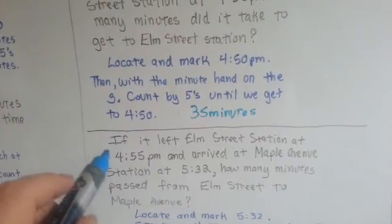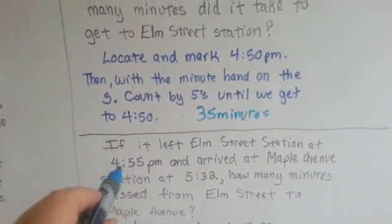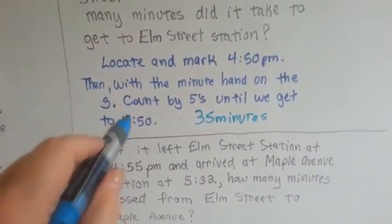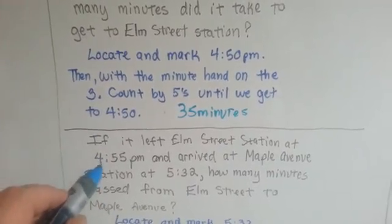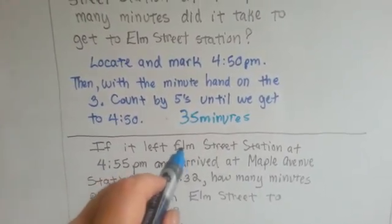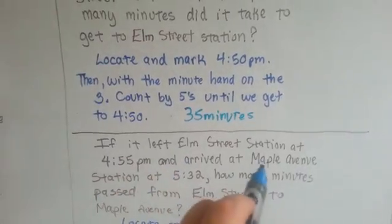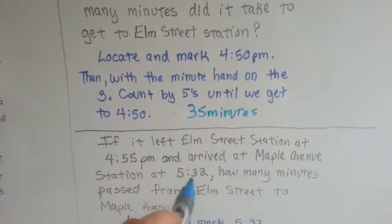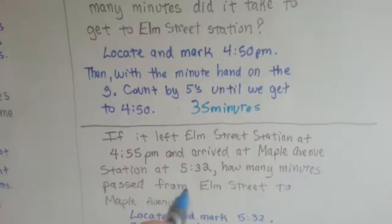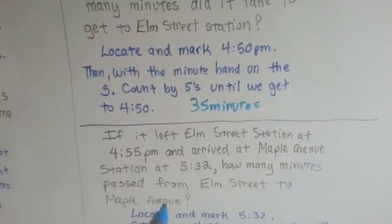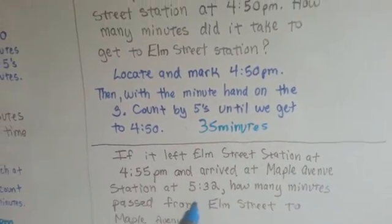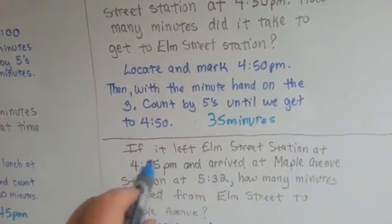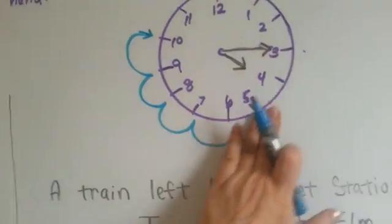If it left Elm Street Station at 4:55, see it took 5 minutes for the people to get on and off the train? So at 4:55, it left Elm Street Station and arrived at Maple Avenue at 5:32. How many minutes passed between Elm Street and Maple Avenue? So now what we need to do is start at 4:55 and end at 5:32. So let's get rid of this.